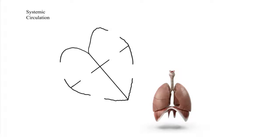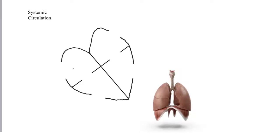The first thing we need to do is label our heart. In our heart we have the right atrium and the left atrium, and we have the right ventricle and the left ventricle. The right side of the heart is primarily responsible for pulmonary blood flow, and the left side of the heart is responsible for systemic blood flow — blood flow out to the rest of the body.